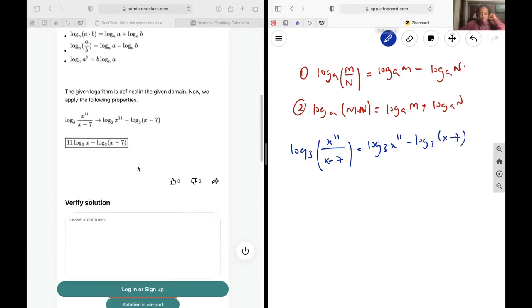And that is going to be it for this question. Oh, and then there's an additional property that we can use. And that is that log base a of b to the power of c is c times log base a of b. So let's go ahead and apply that to deal with this 11.